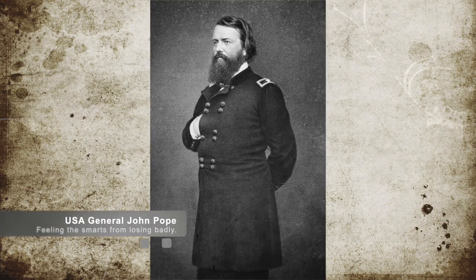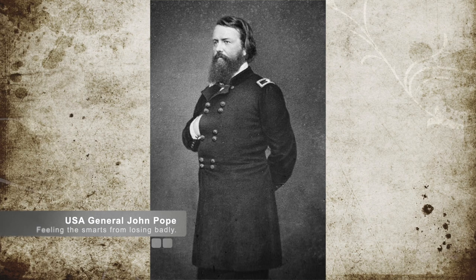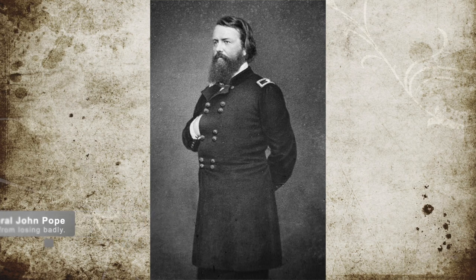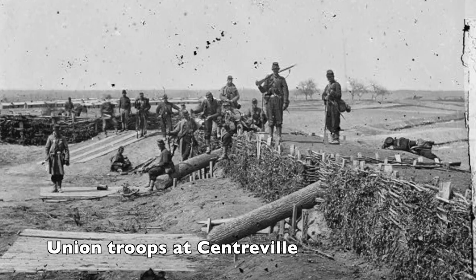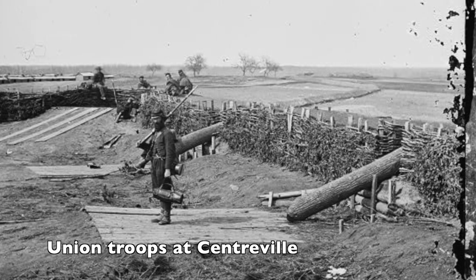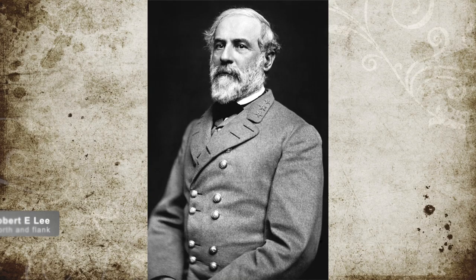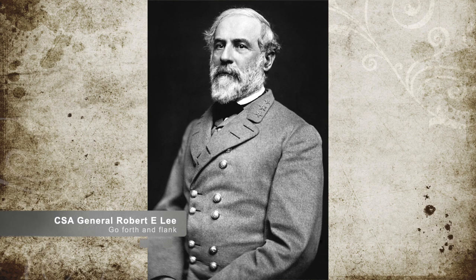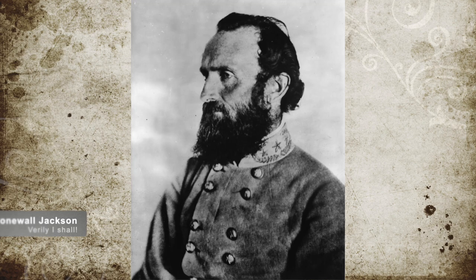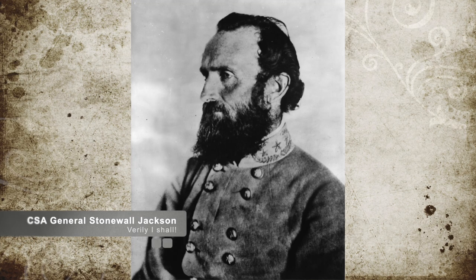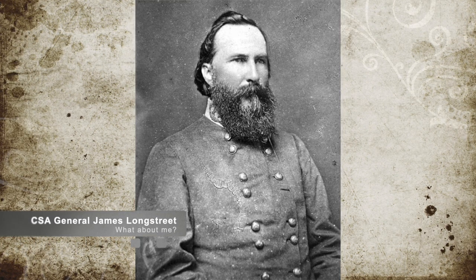The results of the Battle of Second Bull Run was a full retreat by Union General John Pope. Pope pulled his men back to Centerville and set up a defensive position. In an effort to catch Pope, Confederate Commander Robert E. Lee sent Stonewall Jackson and 20,000 men to flank and cut off the Union retreat, while Confederate General Longstreet tried to pin Pope down.